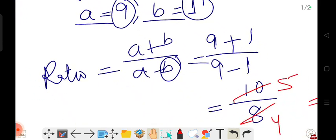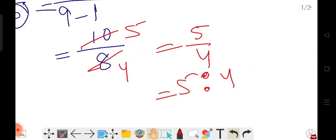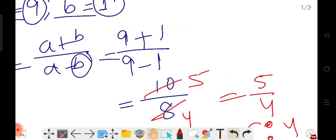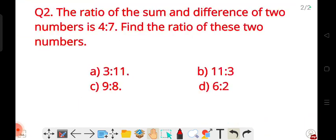Then how do we do it? A plus B over A minus B. This formula gives us the ratio directly. We get the answer here. So next question is: The ratio of the sum and difference of two numbers is 4 to 7. Find the ratio of these two numbers. Same question, same process, same trick.